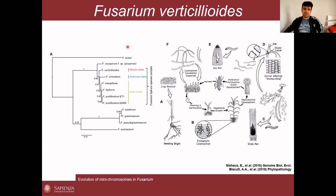The Fusarium fujikuroi species complex is formed of Fusarium proliferatum, Fusarium fujikuroi, and Fusarium verticillioides. At the bottom is the Fusarium graminearum species complex, then you have the Fusarium oxysporum species complex on top, and then the most phylogenetically distinct Fusarium, which is Fusarium solani. The fujikuroi species complex can be divided into at least three clades: the Asian, American, and African clades.